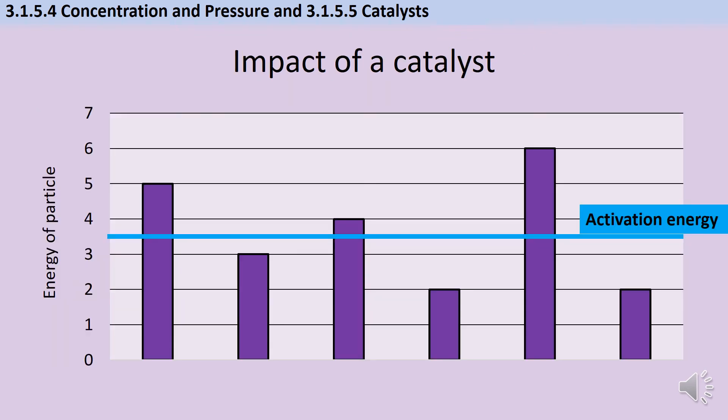We used this simplistic representation in the temperature video, and I want to go back to it now. I've got six particles, and currently three of them have enough energy, they have the activation energy, and their collisions would be successful. Whereas the other three particles don't have sufficient energy. You can see here that the green particles will be able to react, and the red ones wouldn't be.